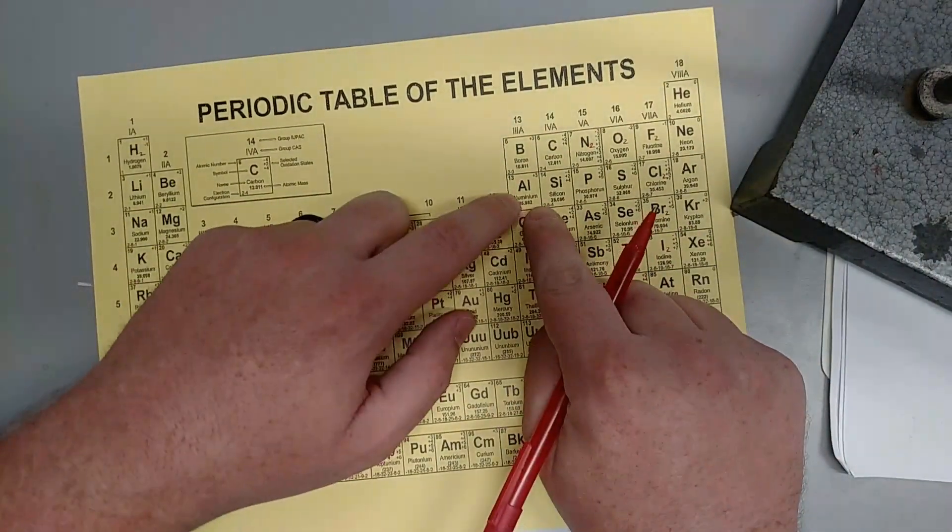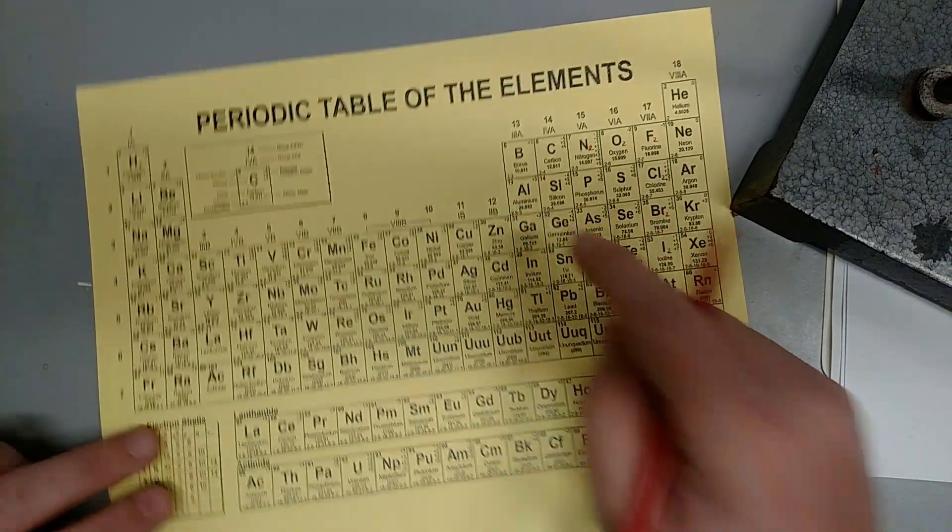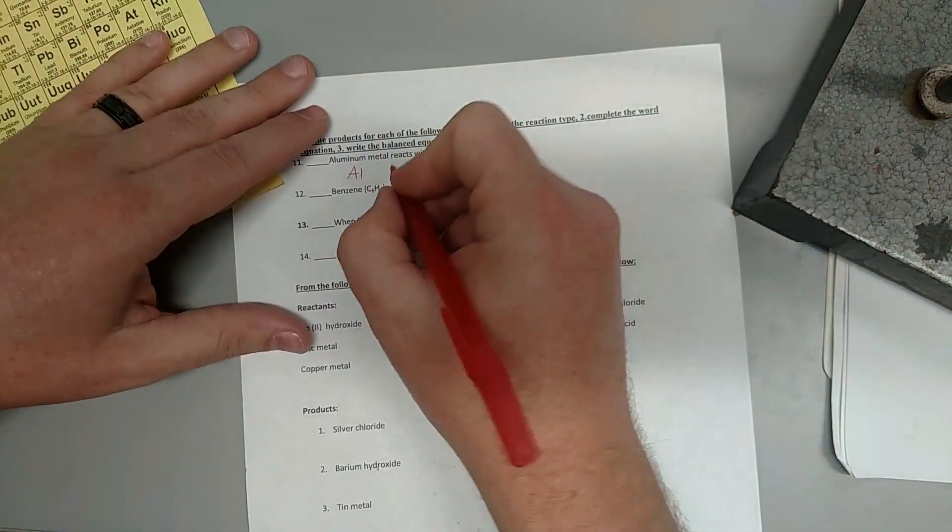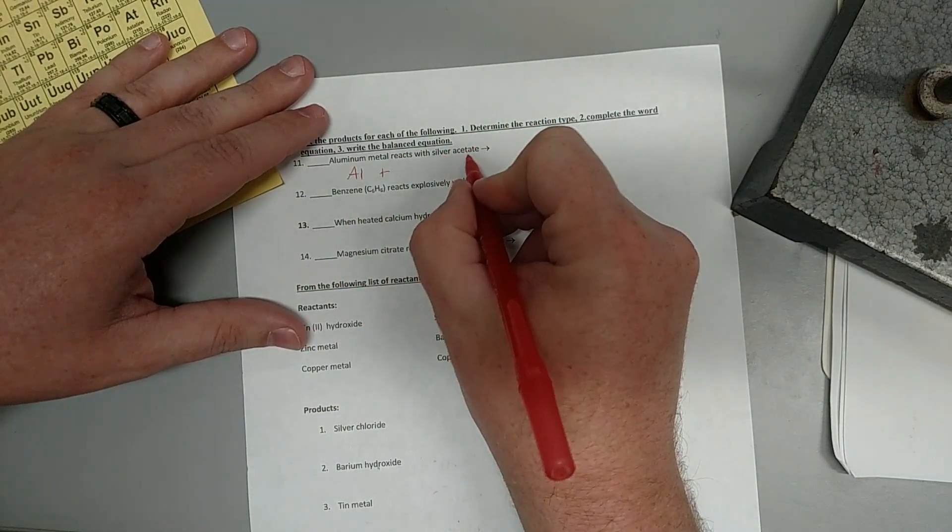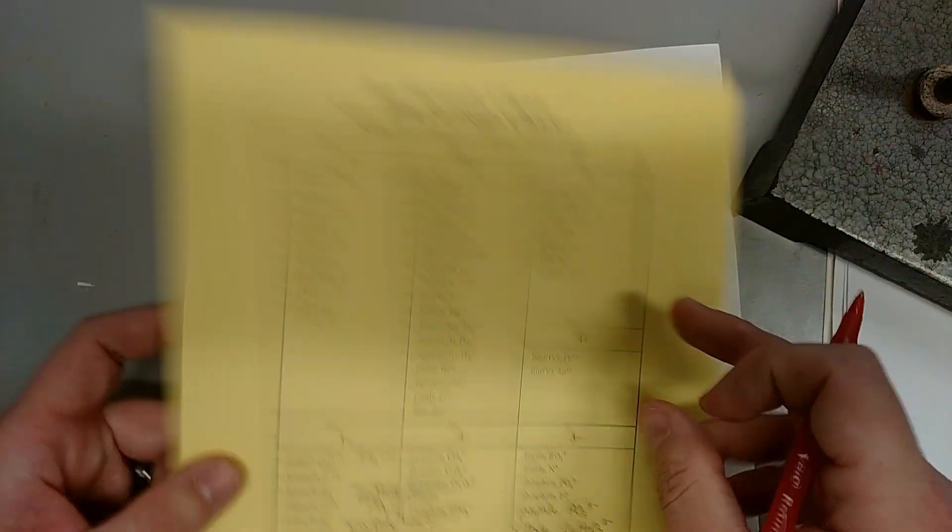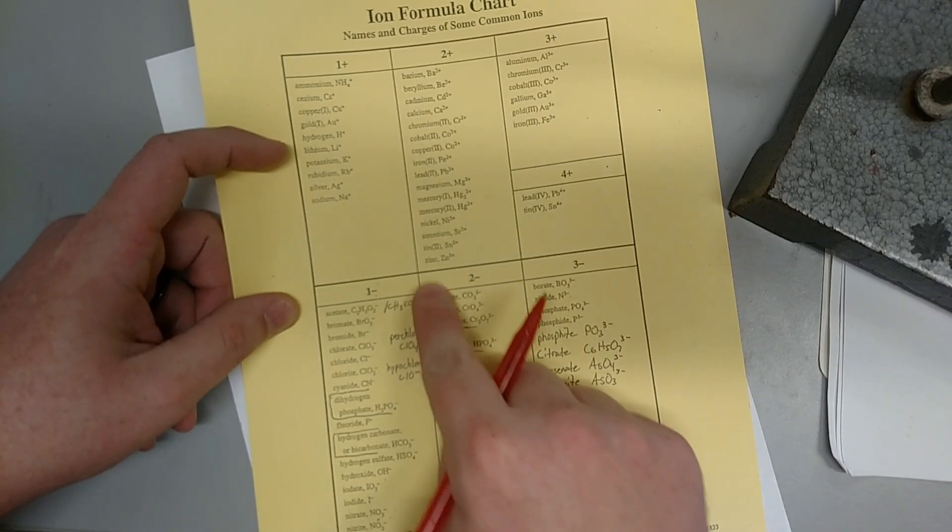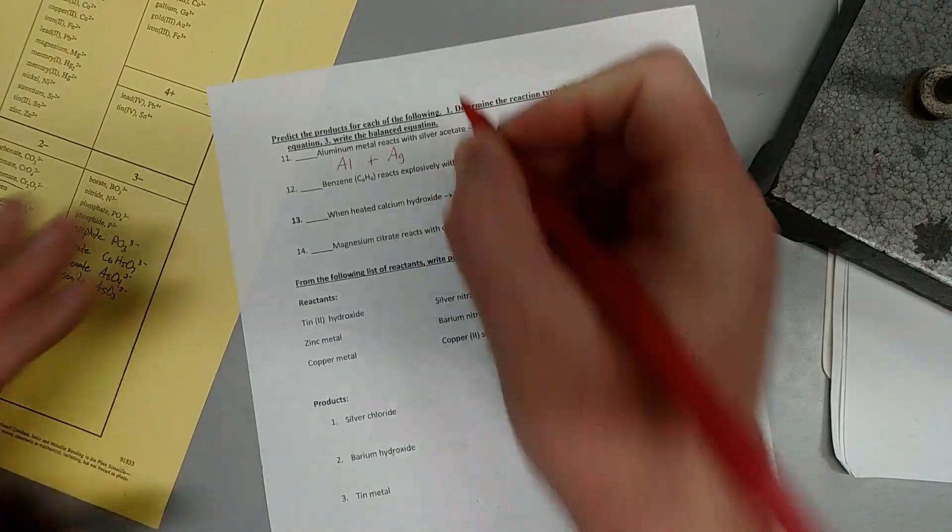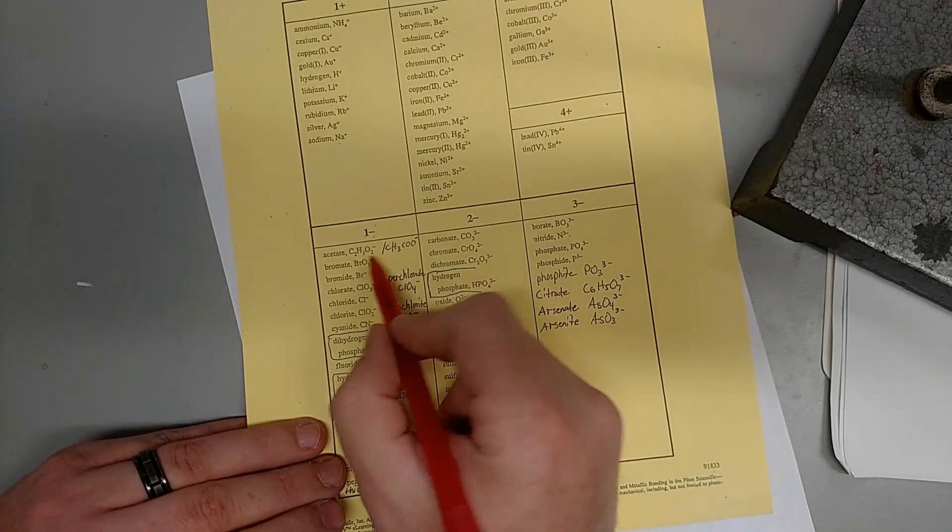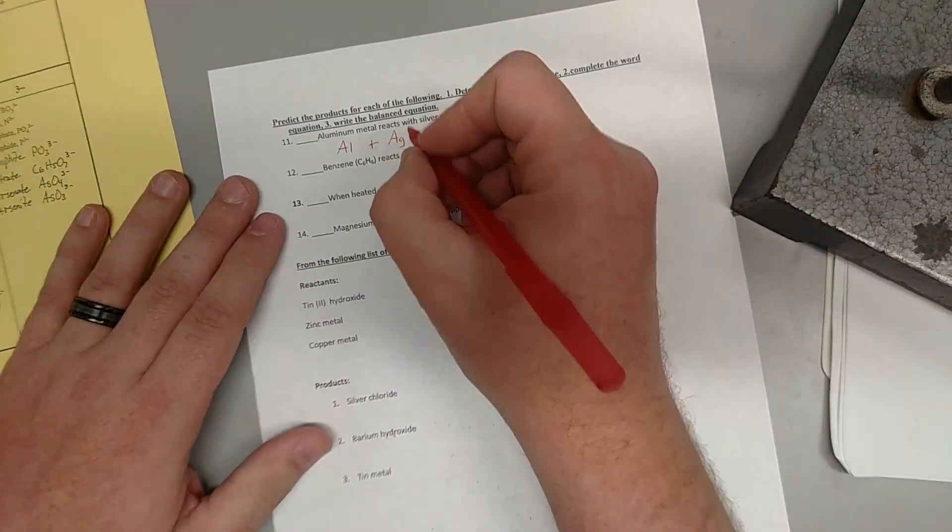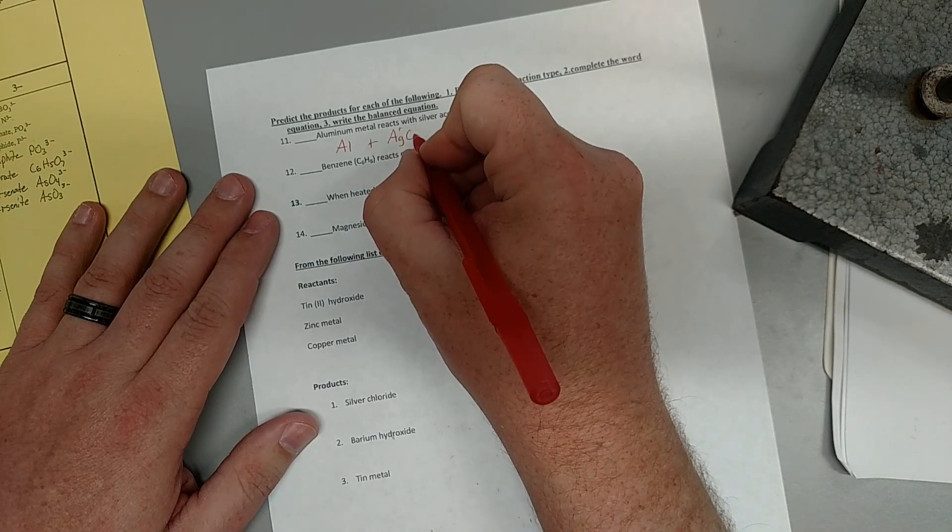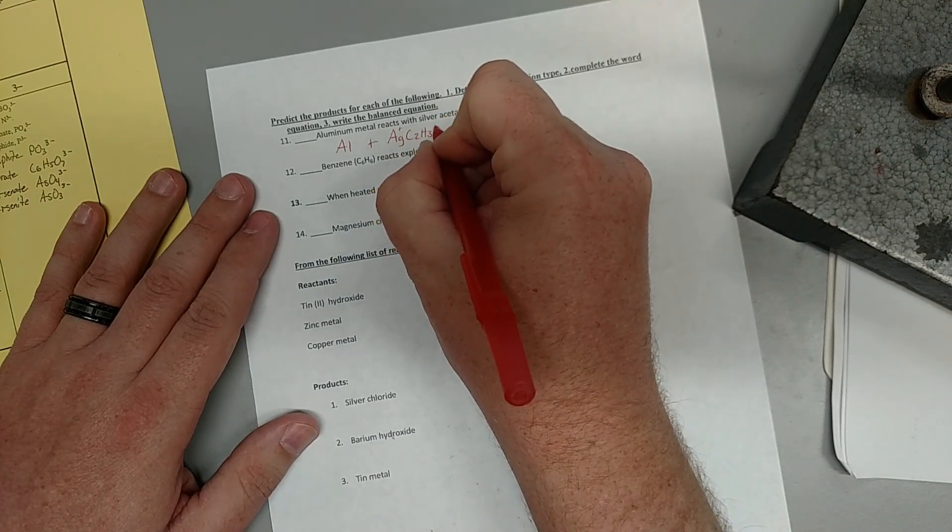So aluminum metal, anytime you just have an element, is going to be just aluminum. So we just write aluminum. Just because it says metal, that doesn't matter. Reacts with silver acetate. Silver, right there, is plus 1, so AG. Acetate has two ways to draw it, that way or that way, it doesn't matter for this. And that's a plus 1, acetate is C2H3O2.